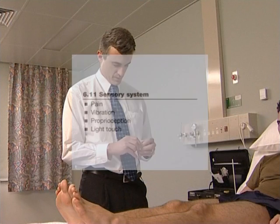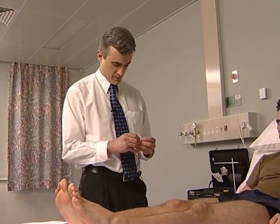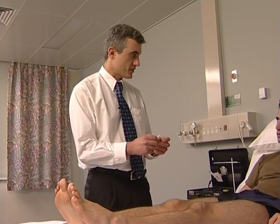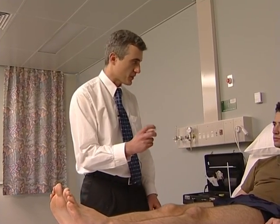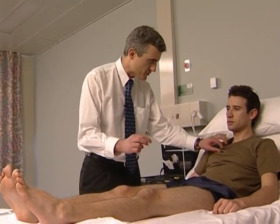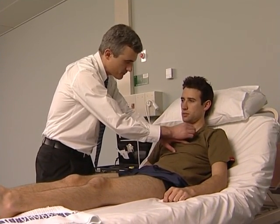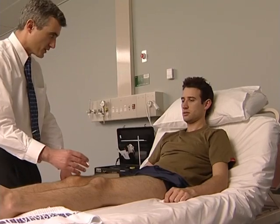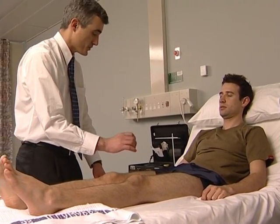Now test the sensory system. Test for pin-prick sensation in each dermatome, comparing the right with the left side. Map out any abnormality and decide on the pattern of loss. What I have here is a neurotip — a blunted pin. It should still feel sharp but won't break the skin. Close your eyes. I'm going to touch your legs in different places and you tell me if you feel it and if it is sharp.